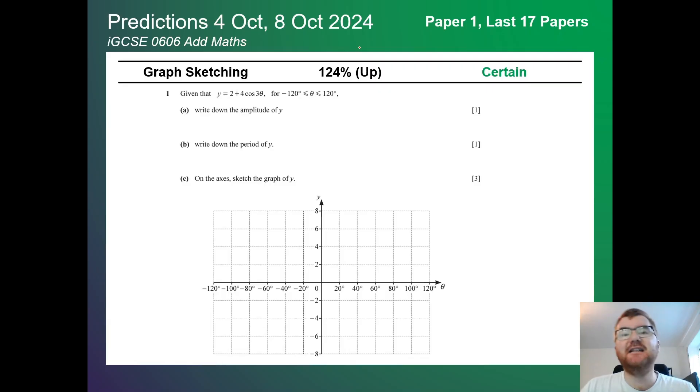On to graph sketching. These questions can vary. Notice we're up to certain here at 124% because of the sheer variety of questions you can have. Notice here we actually have a trigonometric function. You need to know these words like amplitude and period before we start sketching the function.